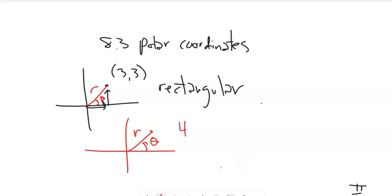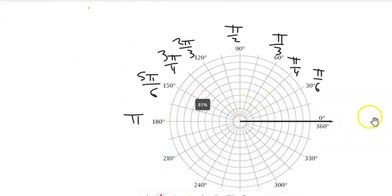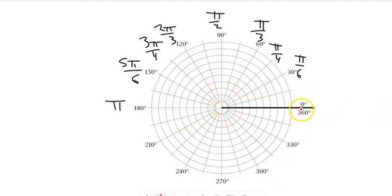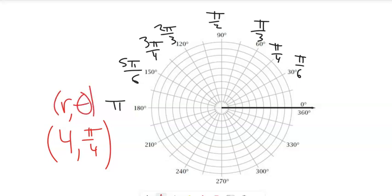For example, the point (4, π/4). On polar graphing paper, we have 0 degrees and angles in both degrees and radians, and distances from the center — 1, 2, 3, 4 — forming circles. To graph (4, π/4), the radius is 4, so we go out to the 4-circle, and then it's rotated up to π/4. That gives us this point right here. It just shows me a location in space.